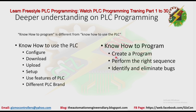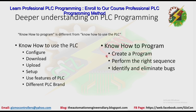Knowing how to program means knowing how to create a program, perform the right sequence, and identify and eliminate bugs. For example, you may know how to use Siemens, Omron, Allen Bradley, and Delta PLCs, but if given a very hard program you cannot write it — that is knowing how to use the PLC. On the other hand, if you only know one type of PLC but can immediately handle a very complex sequence, that is knowing how to program.